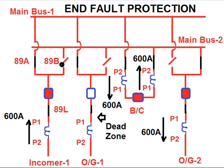The bus bar relay detects the current in the zone based on the isolator status — whichever isolator is closed, it will calculate the current in that zone. For example, if 89A is closed then it will be considered in zone A or zone 1. If 89B is closed then the current will be considered in zone 2 or zone B.